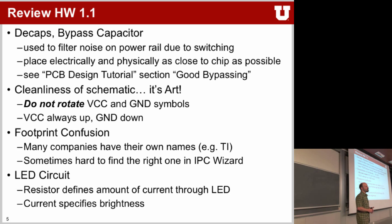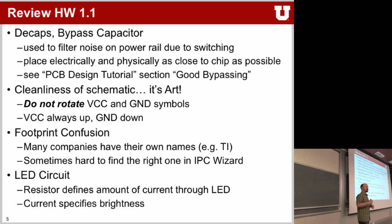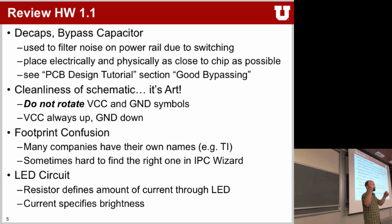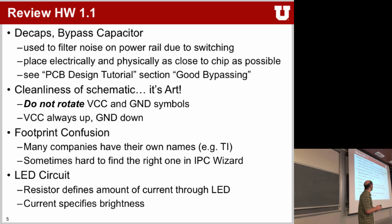A quick review for Homework 1.1 — a couple of pointers for your schematics. You might hear words like decaps or bypass capacitors. These are capacitors you put on the power rails of your microcontrollers to help smooth out fluctuations on your power lines. On the PCB itself, you want them as close to the power pins as possible — a long line between your bypass capacitor and microcontroller acts as an inductor and introduces a problem. There is a document online called the PCB Design Tutorial with a very good section called 'Good Bypassing' — have a look at that whole document.